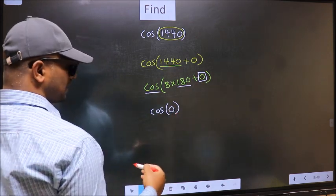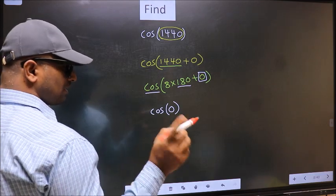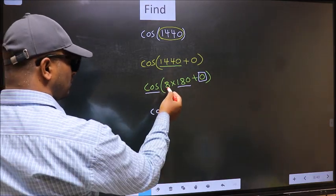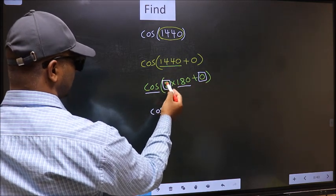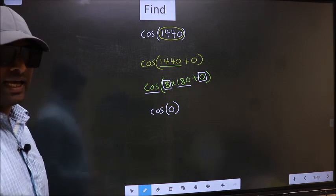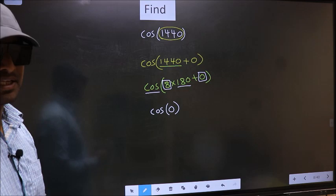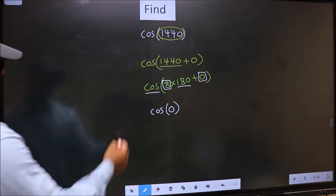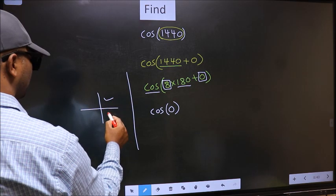Now the question is will we get here plus or minus. To answer that we should look at the number before 180, that is 8, and 8 is even and all the even multiples of 180 they lie either in the first or in the fourth quadrant.